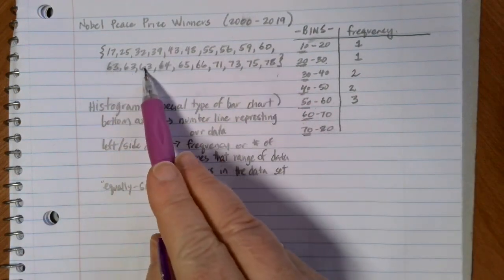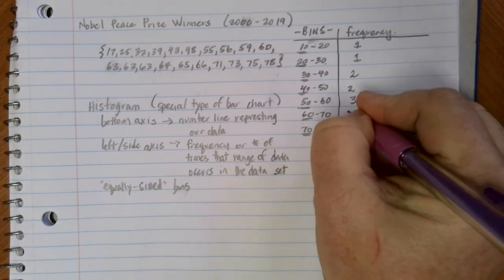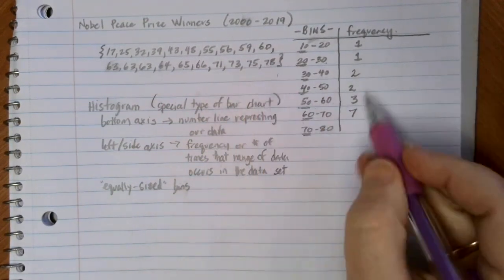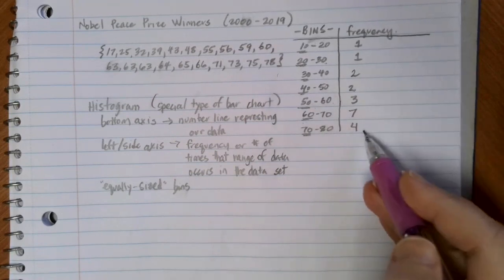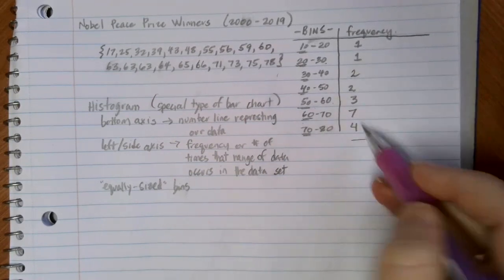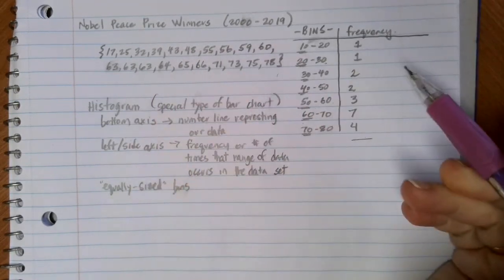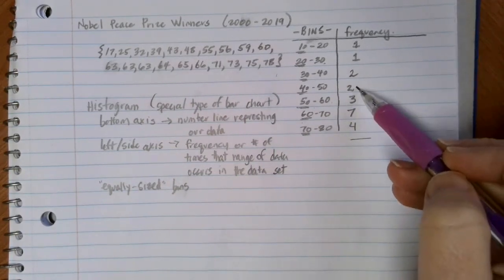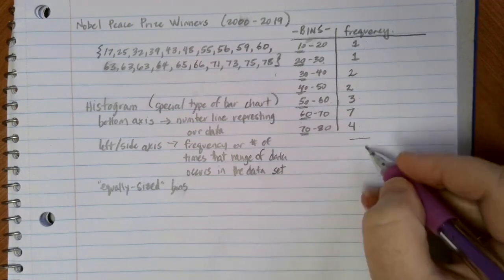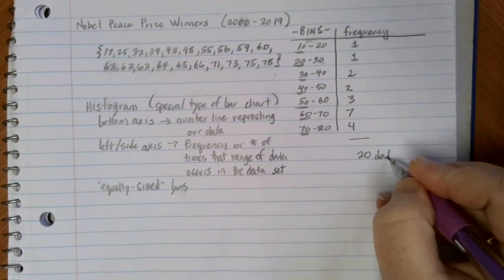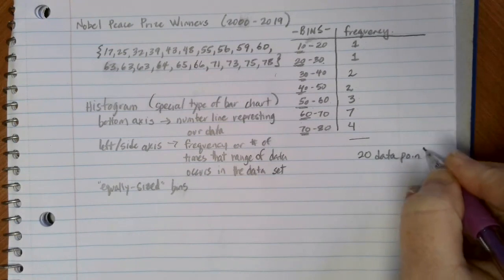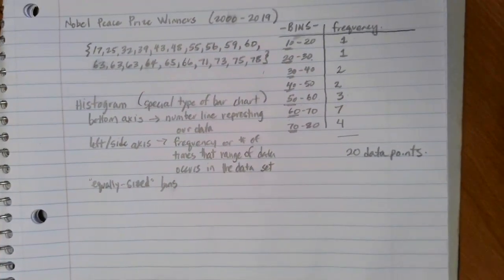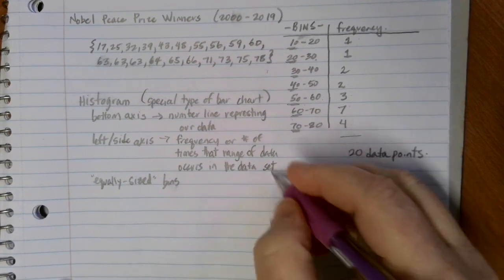So how many do I have in their 60s here? Seven different people in that category. And then in their 70s, I had four people in that category. If you add this up, you should get the total number of data points in your set, and all 20 of my values were represented here. Once I have categories, let's go ahead and take a look at what this graph would look like as we go through.